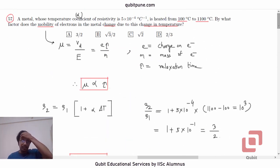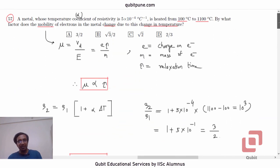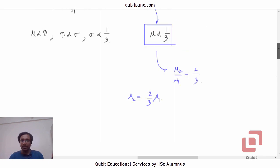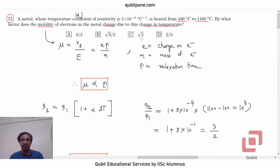Now, they are saying by what factor does the mobility of the electrons in the metal change due to this change in temperature. So, actually, the factor is 1 by 3 because the new mobility is two-thirds the old mobility. But that is not there in the options. So, we have to think about it in this way. The factor with which we should multiply the original mobility to get the new mobility is 2 by 3. Therefore, the correct option is D.